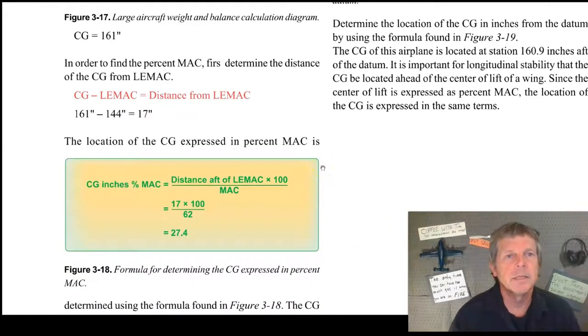Next they tell us, in order to find the percent MAC, determine the distance of the CG from the LEMAC. And we took the CG, which was at station 161, and we subtracted the leading edge MAC, which was 144. So 161 minus 144 is 17 inches. Okay, then we use this formula. So CG in percent MAC is the distance at the leading edge or LEMAC times 100 divided by the length of the mean aerodynamic chord, which we found out in the earlier calculation was 62.